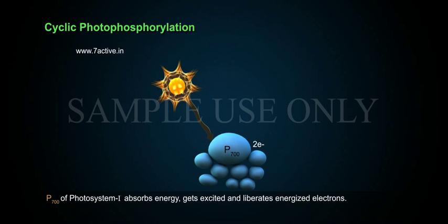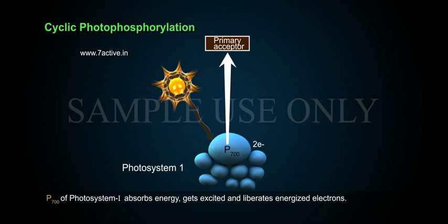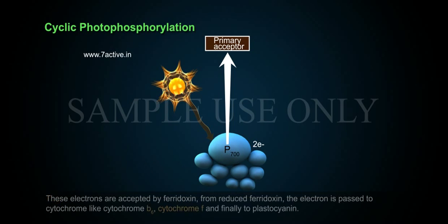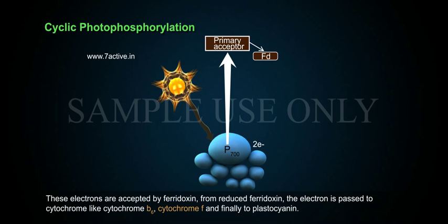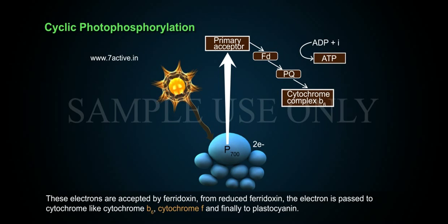P700 of photosystem 1 absorbs energy, gets excited, and liberates energized electrons. These electrons are accepted by ferredoxin. From reduced ferredoxin, the electron is passed to cytochrome-like cytochrome B6, cytochrome F, and finally to plastocyanin.